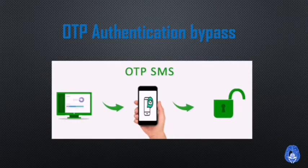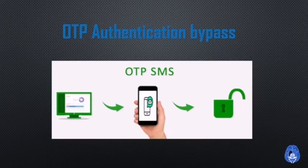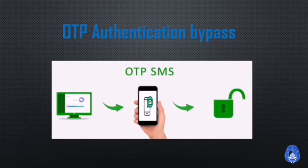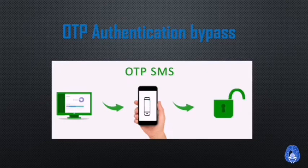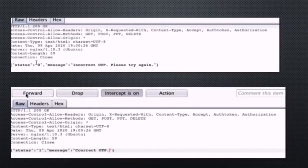Next is OTP authentication bypass. OTP is one kind of authentication used nowadays, mostly for multi-factor authentication. Once you enter your password, an OTP is generated to your registered mobile phone, and after entering the OTP you gain access to the account. There are many different methods to bypass OTPs — here I'll show a screenshot since a live demo will be taught in detail during our trainings.